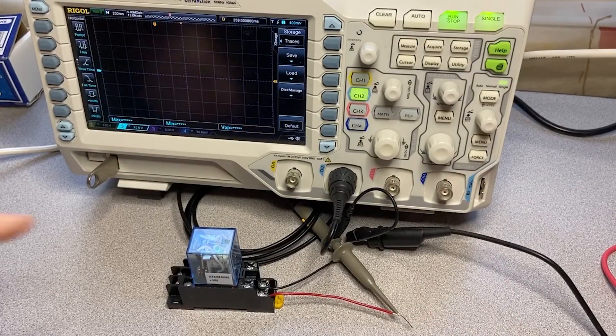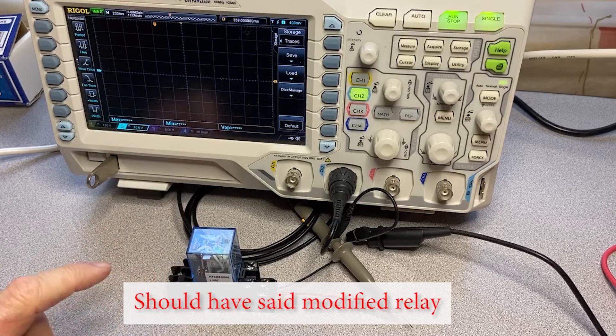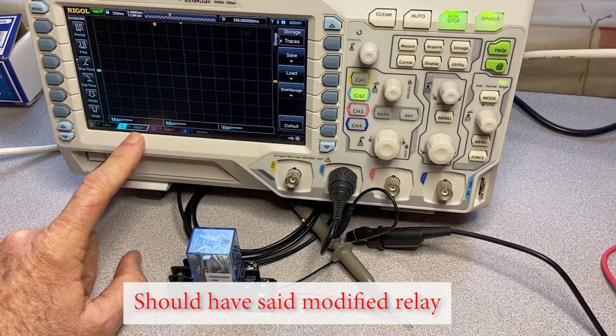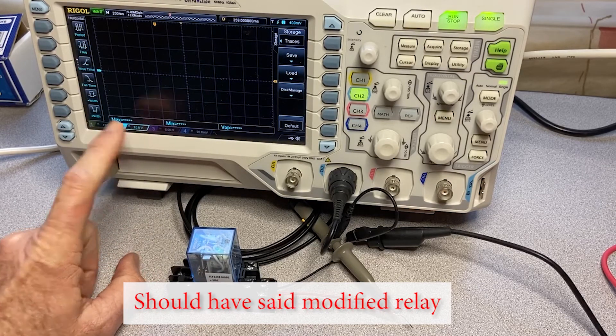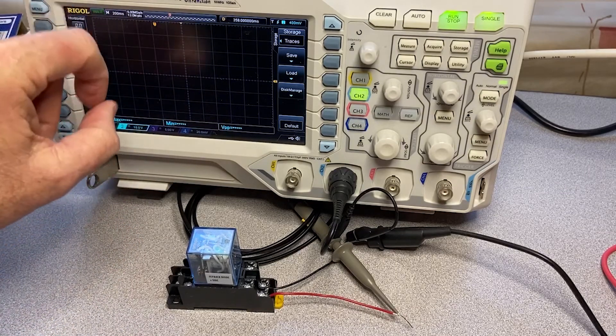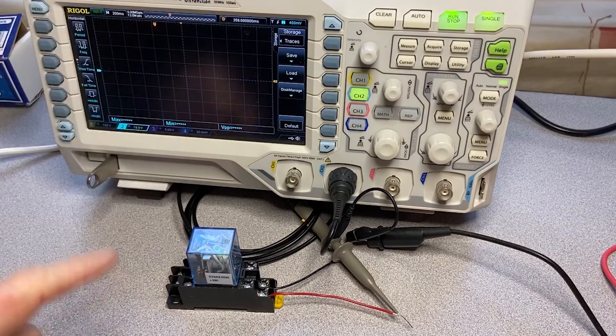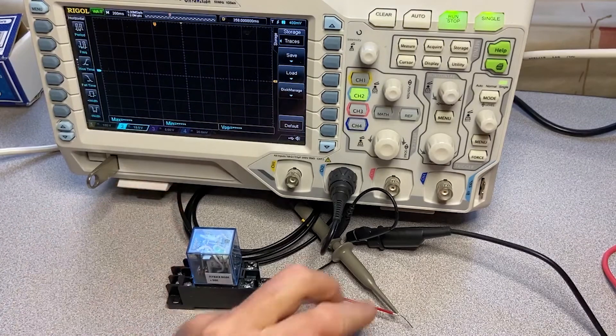We've reset to the modified diode, and I've had to change the scale. This is only 10 volts per division. Before, it was 100 volts per division. That was the only way I could show that huge spike. This one won't have a spike anywhere near that.